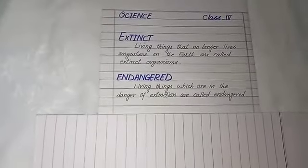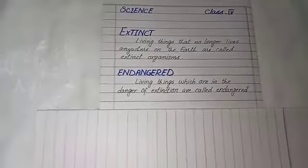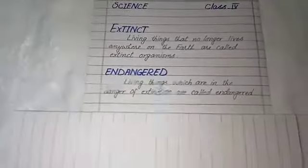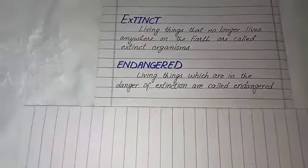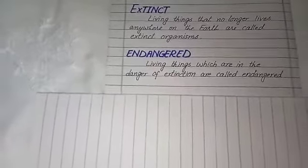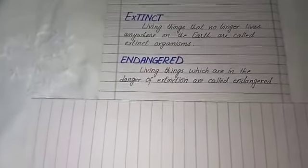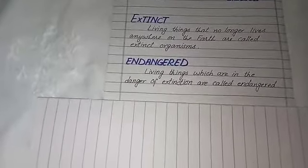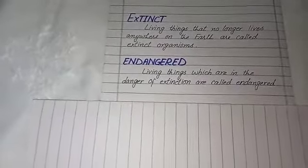The other type is endangered organisms — these are living things which are going to end. Generations and species that are going to end are called endangered. Human beings affect living things in ways that make them go extinct or become endangered. So we have two terms: extinct and endangered.